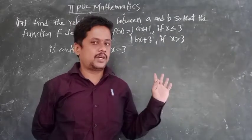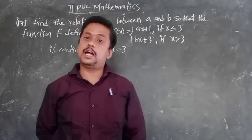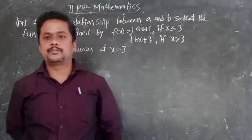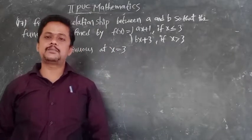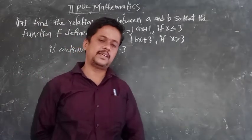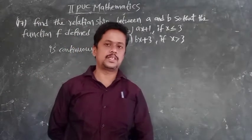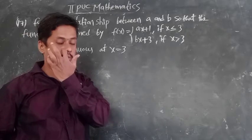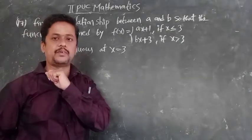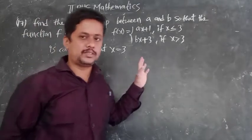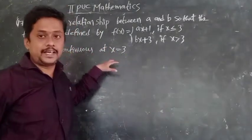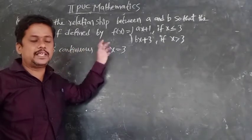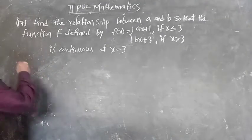This type of problem they will ask for the 4-mark question. In the last 10-mark questions, A is a 6-mark question and B is a 4-mark question like that. So concentrate here on how to find the relationship between A and B.